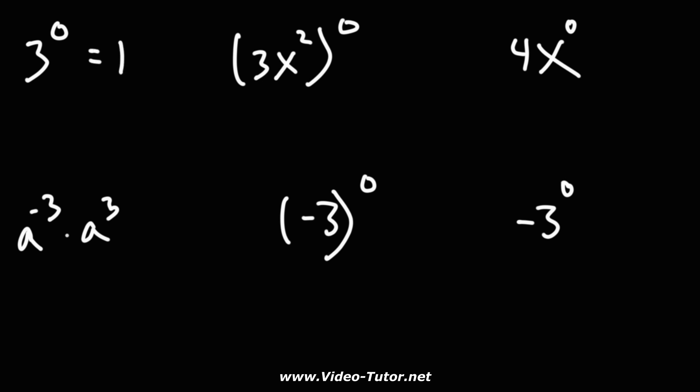Three to the zero is one. Three x squared raised to the zero power, the zero applies to everything inside the parentheses, so this entire thing is one.